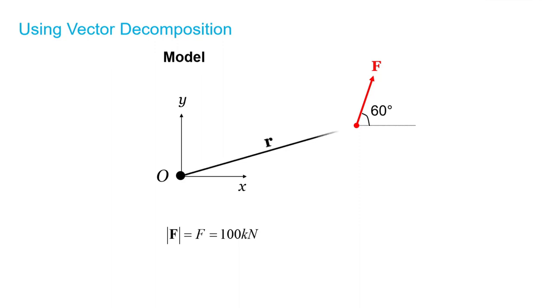Next, we can define our position vector from point O to this force as position vector R. From our problem, we also know that this vector has a magnitude of 13.2 meters and is oriented at 20 degrees.